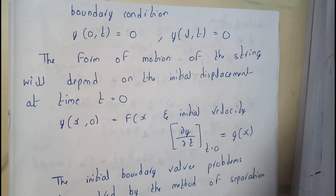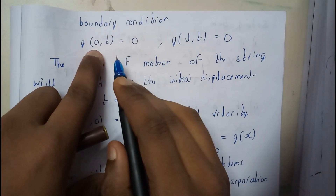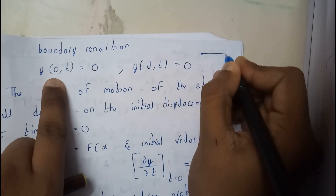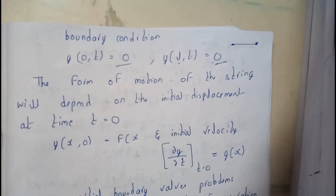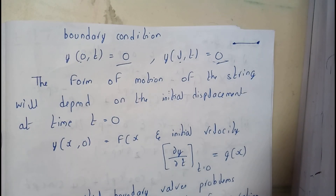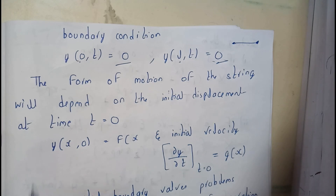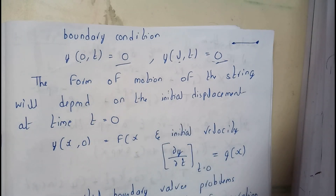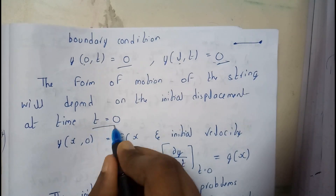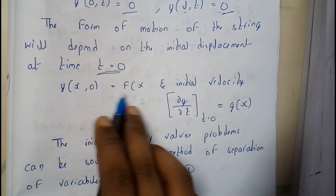The boundary conditions are at the initial position and the final position of the string — that is from 0 to L — the values are zero. These conditions will repeat in the heat equation, wave equation, and Laplace, so remember them as they are the most important part. This is the equation of motion of the string, which depends on the initial displacement, where time t = 0.